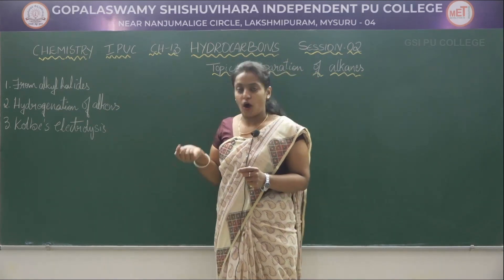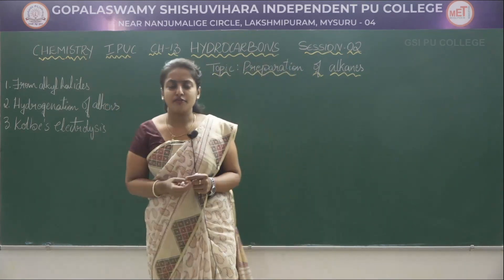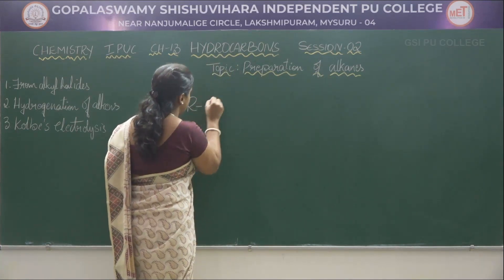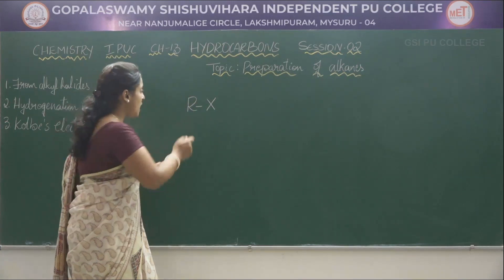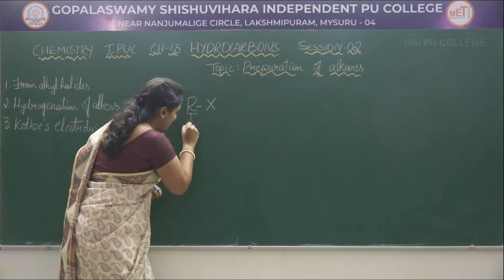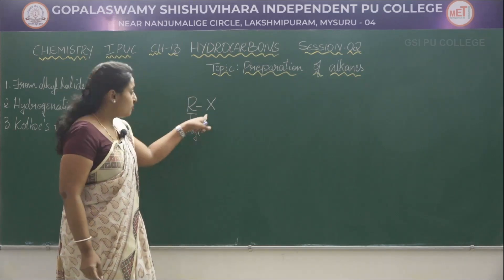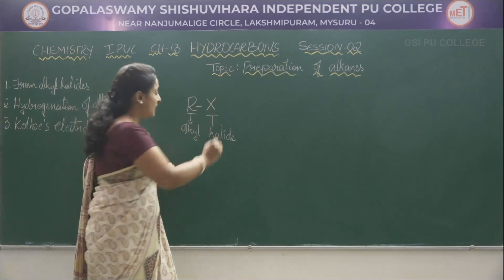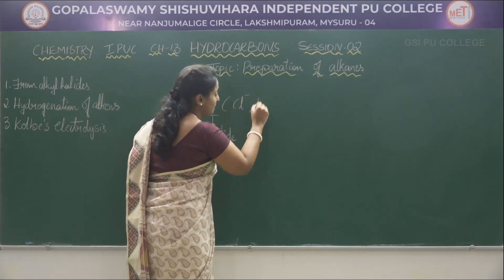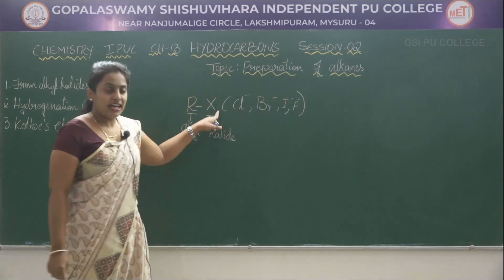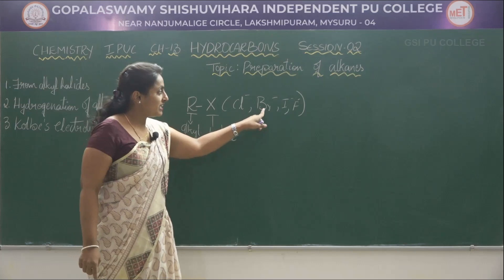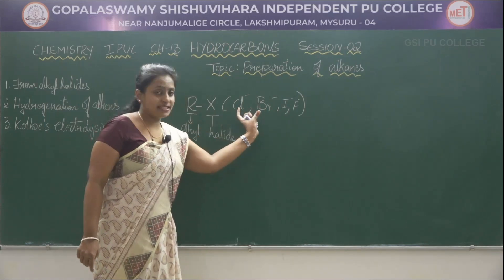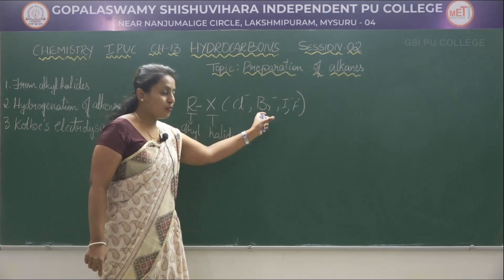Firstly we shall see how we prepare alkanes from alkyl halides. What are alkyl halides? Alkyl halides means R-X. Here R represents the alkyl group, whereas X represents the halide group. X may be Cl⁻, Br⁻, I⁻, and F⁻, where fluoride is highly reactive. Therefore we shall consider only three halides: chloride, bromide, and iodide.